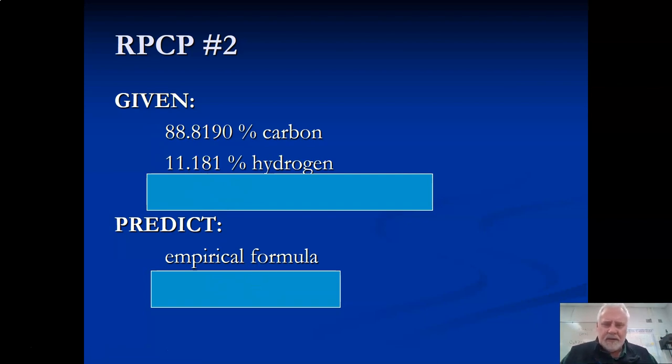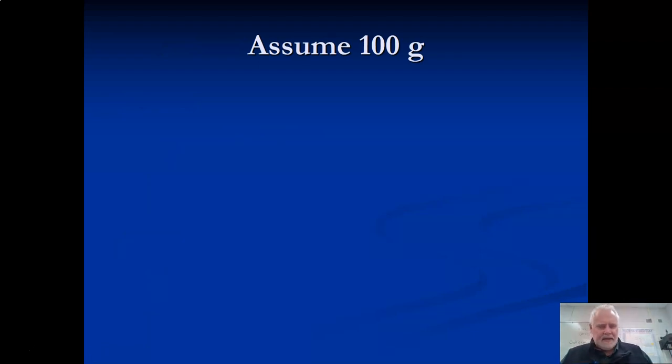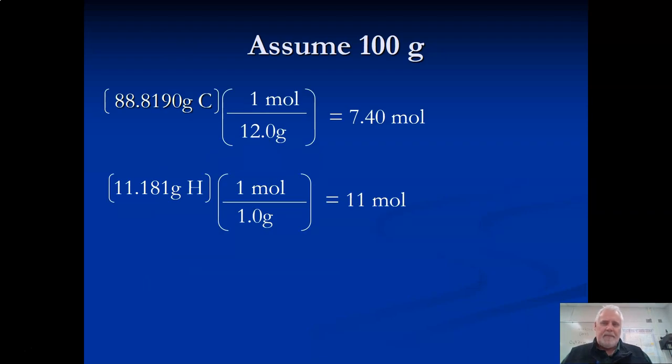We're going to do one more. Write these down - go ahead and hit pause because I'm going to go through this pretty quick. Just leave a little space where those blue boxes are. First step: assume 100 grams, and then all those numbers can be turned into gram amounts. Then we're dividing this and we're dividing this. You got to watch those sig figs. This one looks like it has a whole bunch of numbers - it does, it has six sig figs - but our conversion only had three, so 7.40 moles for this one. Watch this guy: if you divide it by hydrogen, that's 1.0 - that's only two sig figs - so when you divide that, that's eleven.